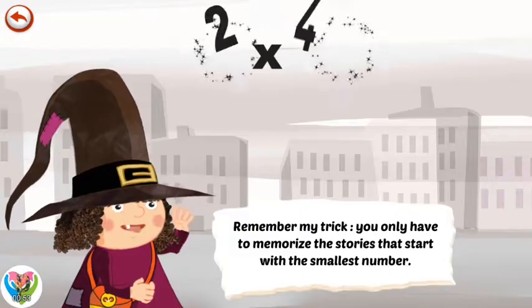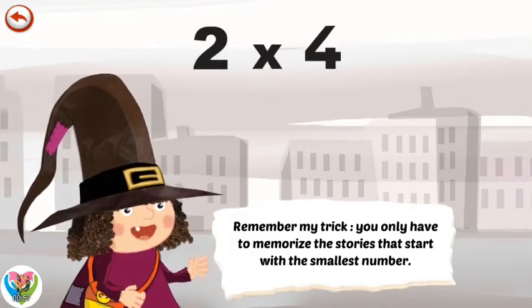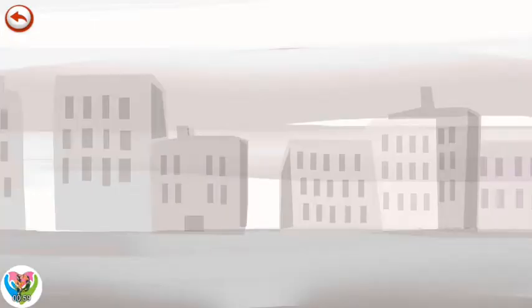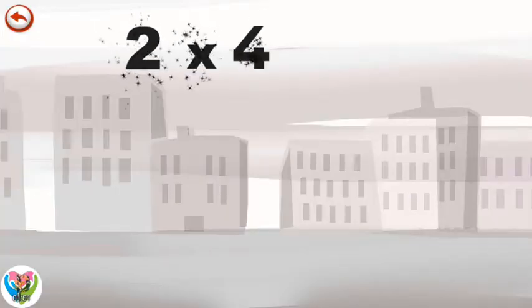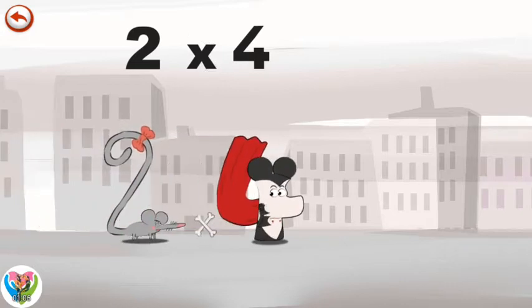Remember my trick, you only have to memorize the stories that start with the smallest number. What's the story of two times four? When two squeaks sees Vamp 4 disguised as a mouse,